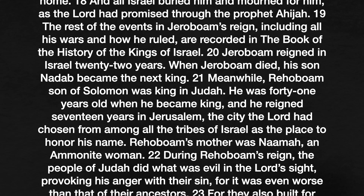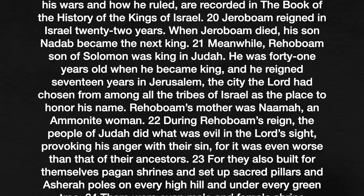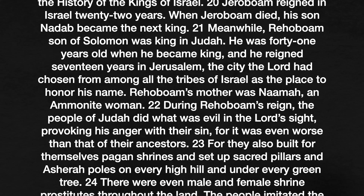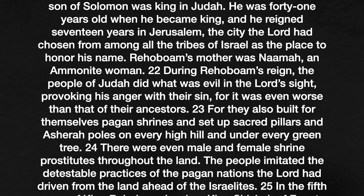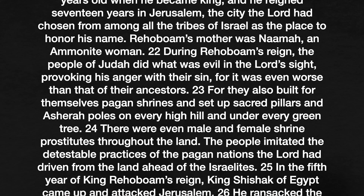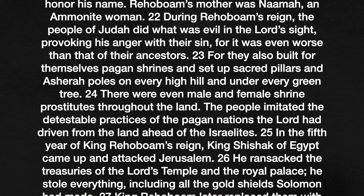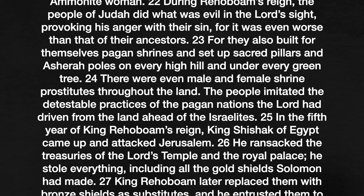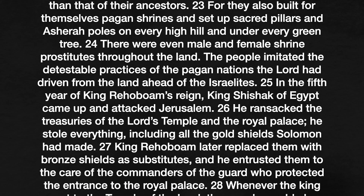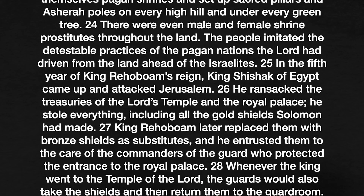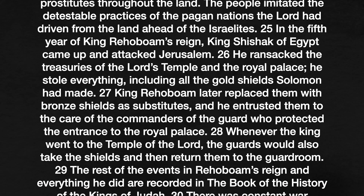The rest of the events of Jeroboam's reign, including all his wars and how he ruled, are recorded in the book of the history of the kings of Israel. Jeroboam reigned in Israel 22 years. When Jeroboam died, his son Nadab became the next king. Meanwhile, Rehoboam son of Solomon was king in Judah. He was 41 years old when he became king and he reigned 17 years in Jerusalem, the city the Lord had chosen from among all the tribes of Israel as a place to honor his name. Rehoboam's mother was Naamah, the Ammonite woman. During Rehoboam's reign, the people of Judah did what was evil in the Lord's sight, provoking his anger with their sin — for it was even worse than that of their ancestors. They built for themselves pagan shrines and set up sacred pillars and Asherah poles on every high hill and under every green tree.